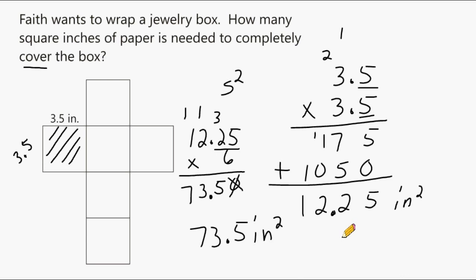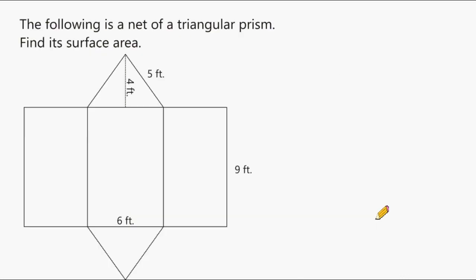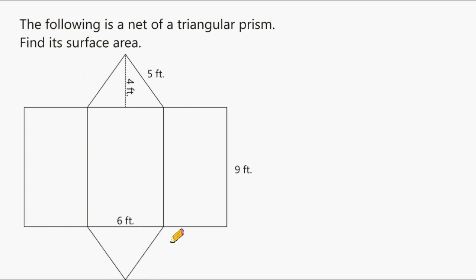Let's go ahead and solve another example involving surface area. What we have here is the two-dimensional form of a triangular prism, and what we have to do is find its total surface area. One thing we should know before getting started is that the two triangular surfaces of any triangular prism are congruent to each other, meaning that they will have the same area.